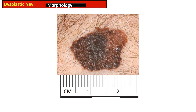Dysplastic nevi are usually acquired and occur on both sun-exposed and sun-protected body surfaces. Another picture shows the gross appearance of dysplastic nevi: the moles are larger and deeply pigmented, melanin distribution is uneven, and at the margins there is hyperpigmentation with irregular borders.